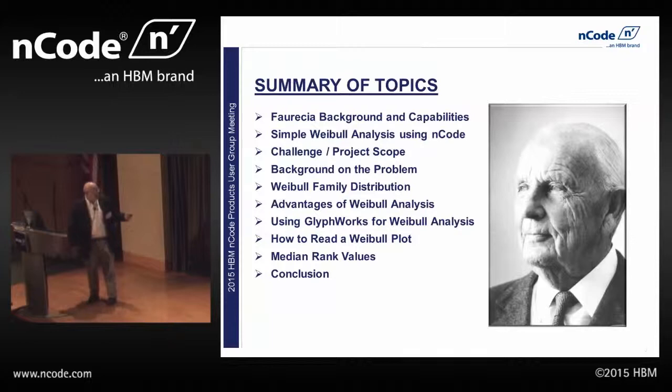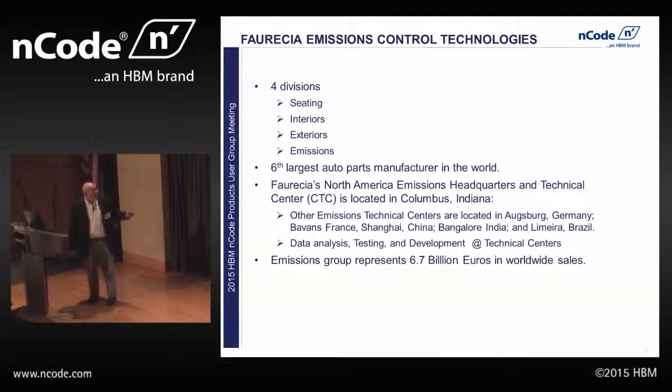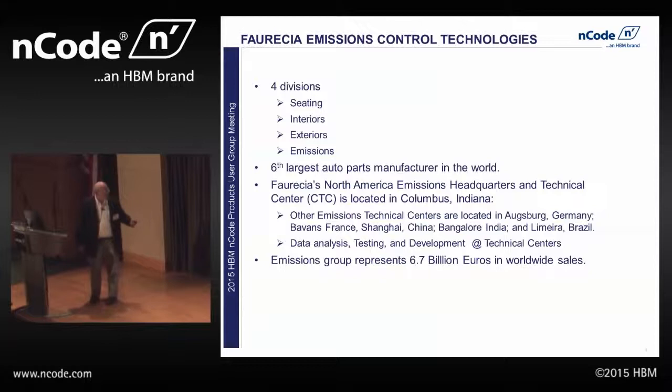Parisha consists of four divisions. I work in the exhaust division, which we call emissions, with the six largest auto manufacturers in the world. The emissions group is 6.7 billion euros — multiply that by 1.11 to figure it out in dollars. I know you're all pulling your phones out to do that now.